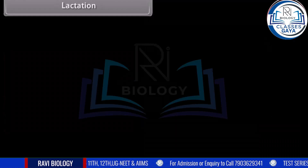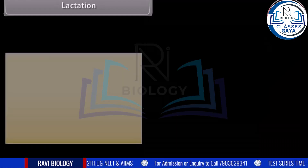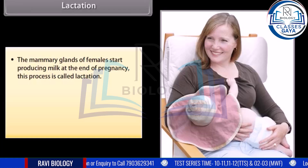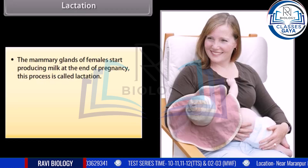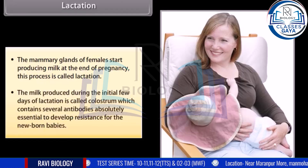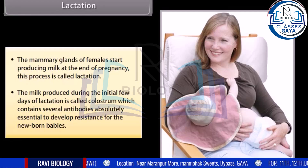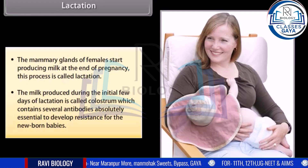The mammary glands of females start producing milk at the end of pregnancy. This process is called lactation. The milk produced during the initial few days of lactation is called colostrum, which contains several antibodies absolutely essential to develop resistance in newborn babies.